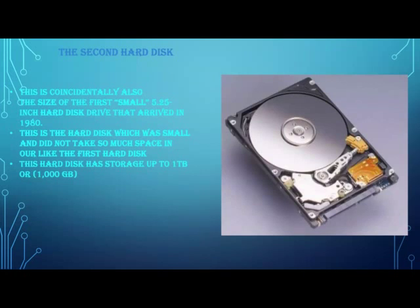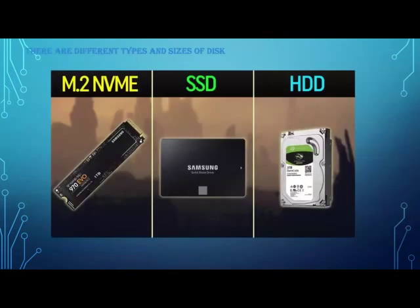This hard disk has storage up to 1 TB or 100 GB or 1000 GB. These are the different types of hard drives. This is a Seagate hard drive, and it can contain up to 2 to 4 TB. An SSD can contain up to 15 TB of storage.